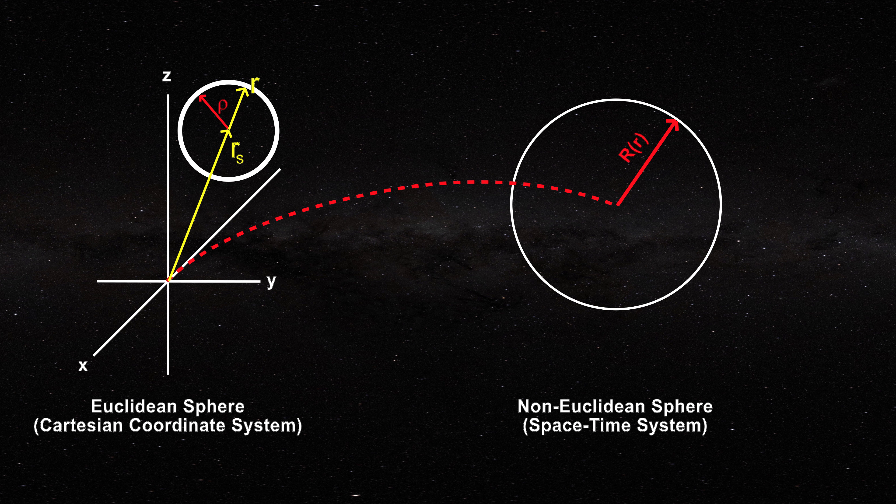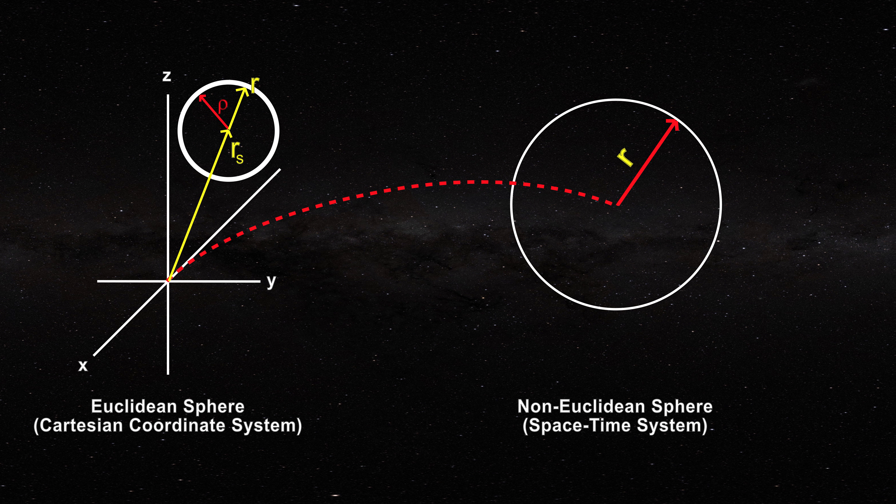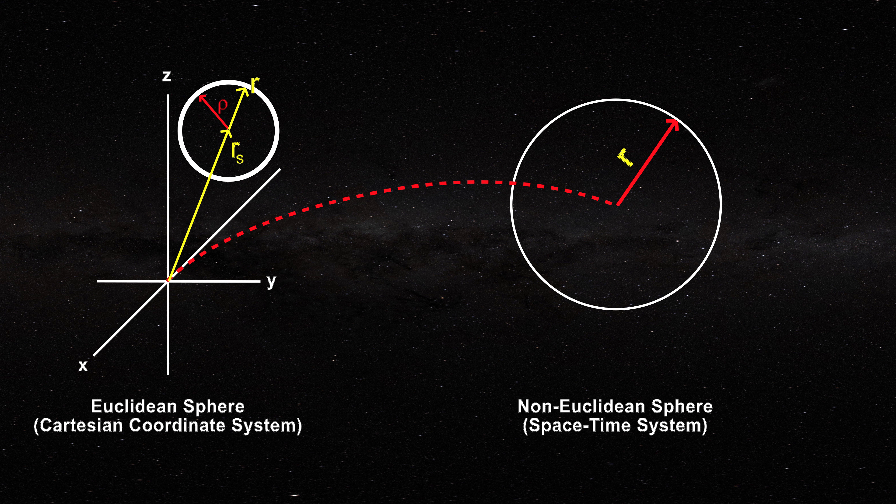Cosmologists then incorrectly regard little r, issuing from the origin of coordinates of the space containing the Euclidean sphere and passing through its center, as the radius of the non-Euclidean sphere and therefore assume that it can go down to zero, causing the centers of the two spheres to correspond.